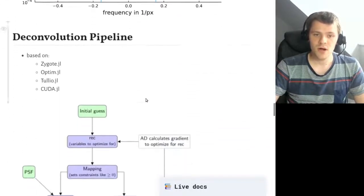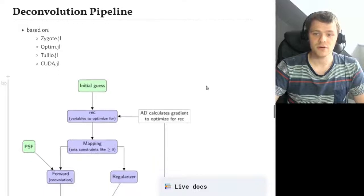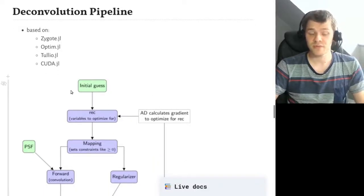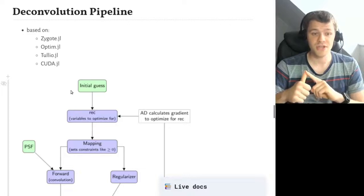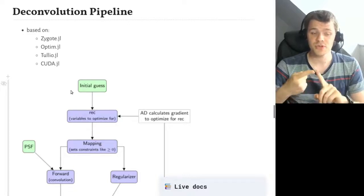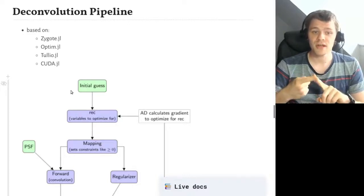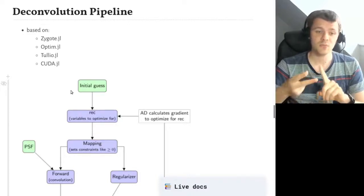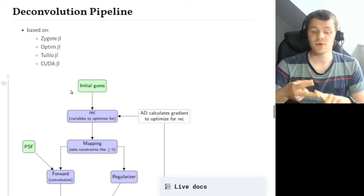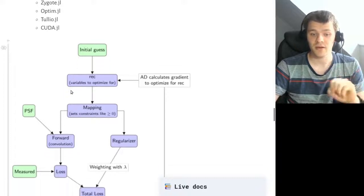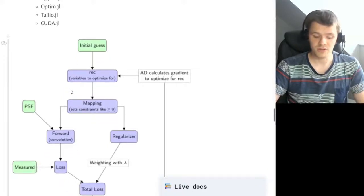So how does our deconvolution pipeline work? First of all, we use several packages: Zygote.jl for automatic differentiation, Optim.jl for the optimization, Tullio to calculate the regularizers very quickly, and we can also use CUDA to calculate everything on the GPU.